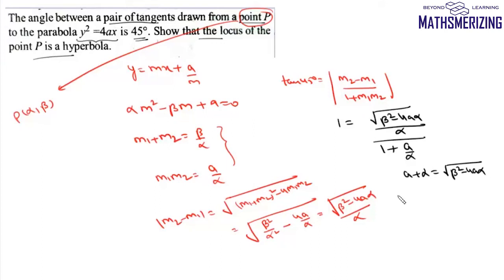Now we'll square it to get a² + α² + 2aα = β² - 4aα.